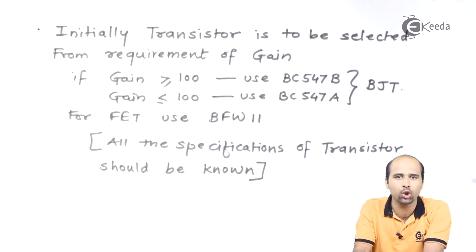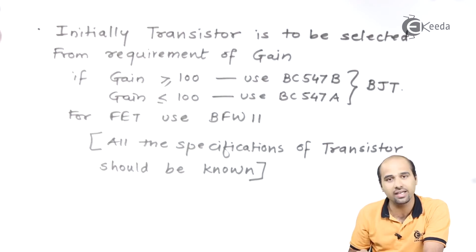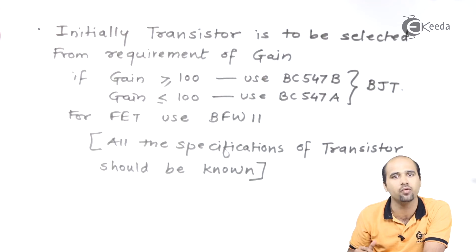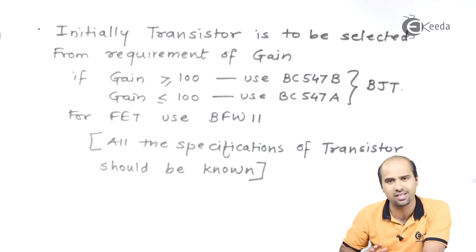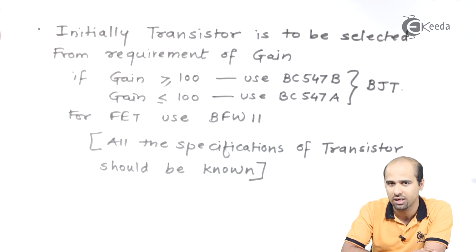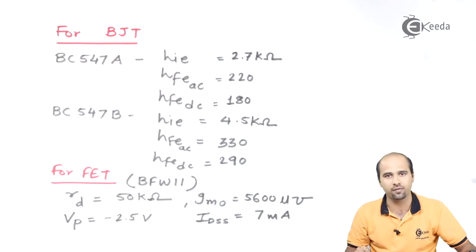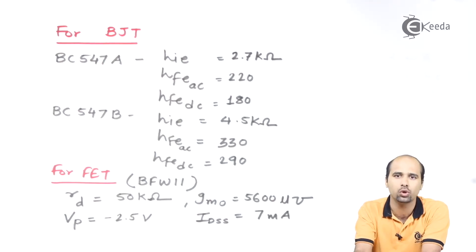A very crucial part is the selection of the transistor — which transistor we have to select and why. If gain is greater than 100, we will select BC547B if we are using a bipolar junction transistor. If gain is required to be less than 100, we will use BC547A. For FET, we will use only one type of FET, that is BFW11. You should know each and every specification related to BJT as well as FET. Even if a datasheet is not provided, you must know the few parameters related to the rating of the transistors.